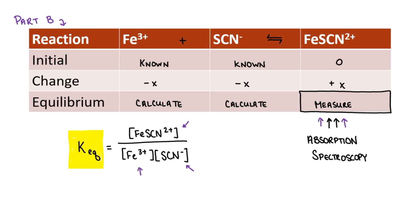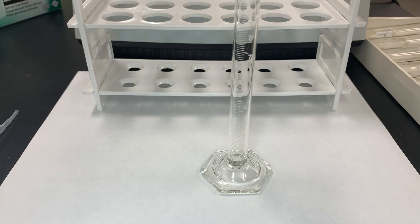Now because this is science, we can't just do one trial and call it good. We will be doing five total test trials, each with slightly different concentrations of iron and thiocyanate. Ideally, because this is a constant, our calculated Keq values should all be almost the same.